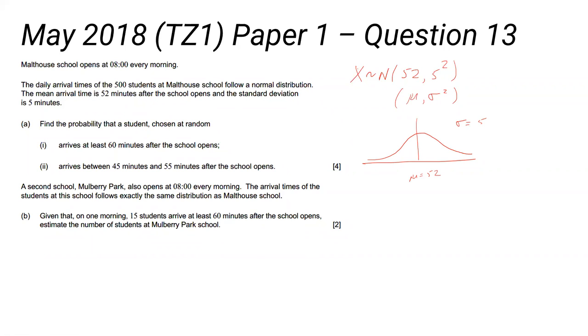Find the probability that a student chosen at random arrives at least 60 minutes after the school opens. This is a nice school, isn't it? It opens at 8 o'clock and people are arriving 52 minutes after that. It'd be lovely to have a school that was like that. At least 60 minutes after the school opens. And so we're looking at the line where the time is 60. So we know that's the right of the mean because the mean is 52. So we're looking at this probability.